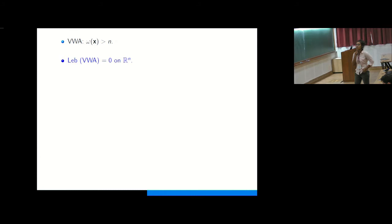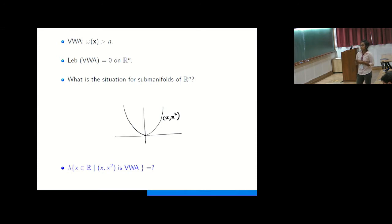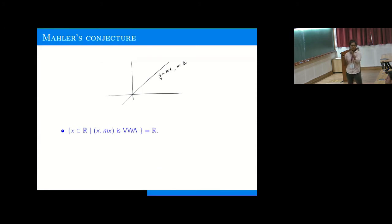A classical result says that the Lebesgue measure of the set of very well approximable vectors has measure zero. One can ask what happens if you take a manifold inside R^n. For example, in R^2 you take a parabola and ask: what is the measure of the set of x such that (x, x^2) is very well approximable? It is clearly not true that for any manifold the set will have measure zero — if you take a line in R^2 with integer slope, then every point on that line would be very well approximable.